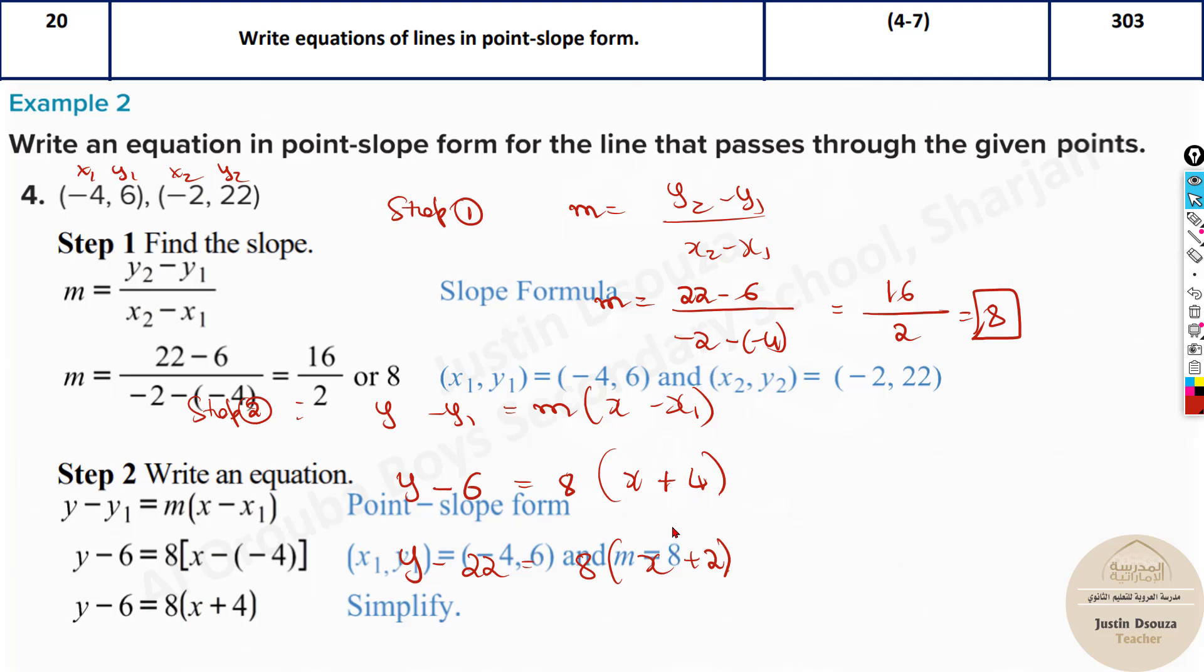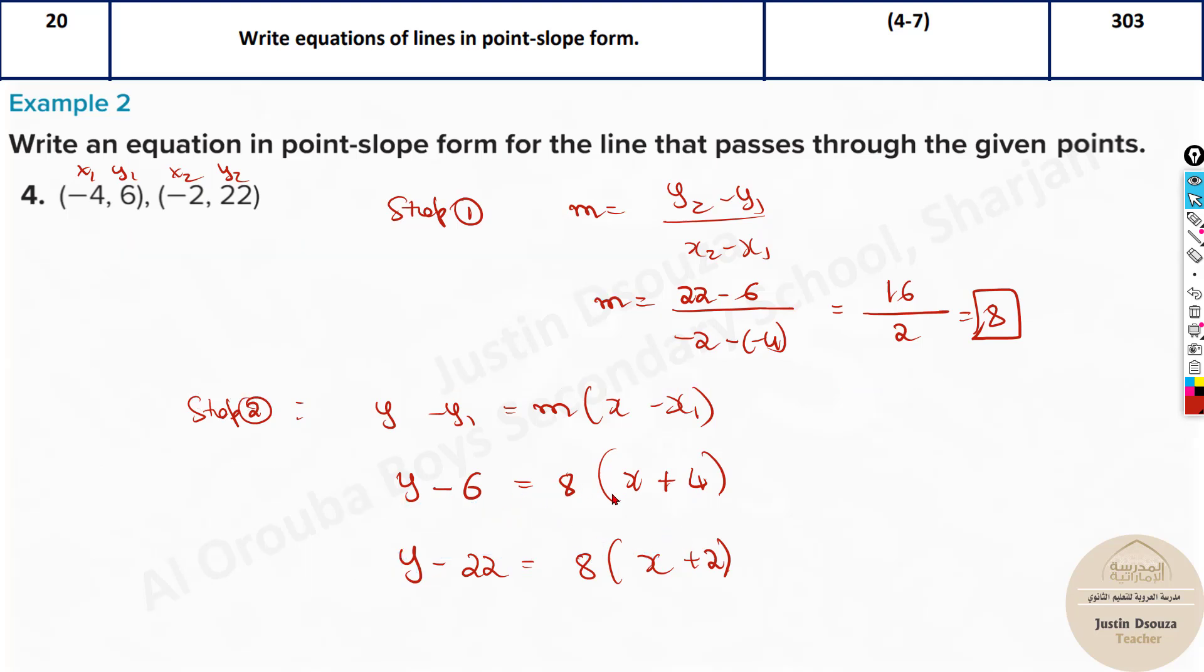You don't even simplify it because point-slope form specifies it's like this. Now if you have done this also, it's correct. This is also correct answer, don't worry. But you just take the first point and do it. Usually this will be the answer, but it's in writing so your teacher will understand when it's correct.